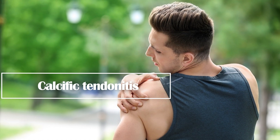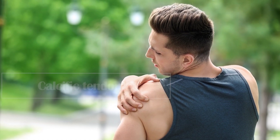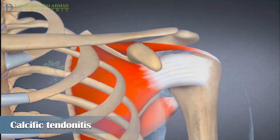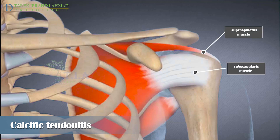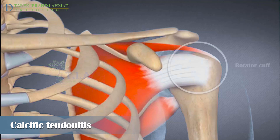Calcific tendonitis can happen anywhere in your body. The most common area to develop is the rotator cuff, especially the supraspinatus tendon. The rotator cuff is the group of muscles and tendons that provide strength and stability to the upper arm and shoulder.